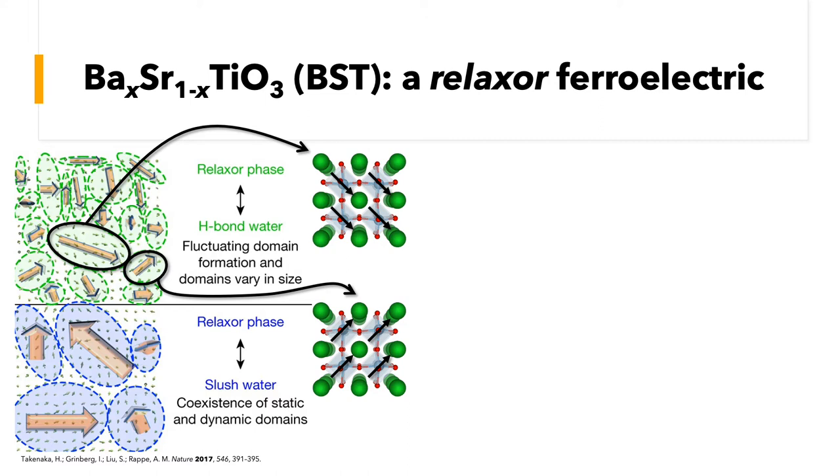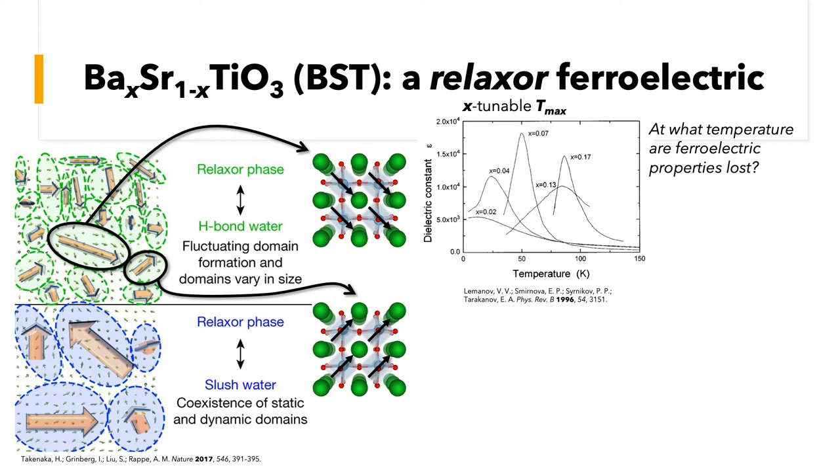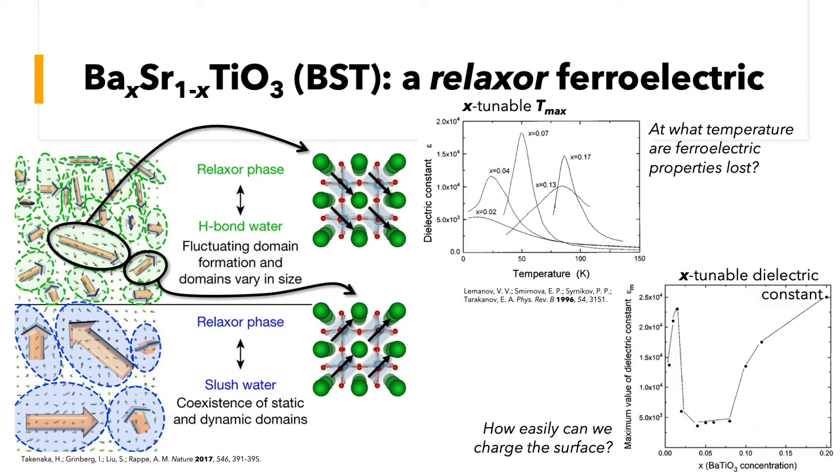But BST is unique in that BTO is a ferroelectric and STO is paraelectric, but when you mix the two you get relaxer-like behavior at certain compositions. In other words, this means you can tune the ferroelectric properties of BTO via strontium substitution on the A site. For example, by varying the amount of strontium cations on the A site, you can control the temperature of the maximum dielectric constant, T sub max, which is the temperature at which ferroelectric properties are lost and above which relaxer properties start to wane, and the magnitude of the dielectric constant, which to some extent describes the ease with which surfaces can be charged.